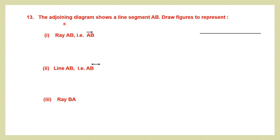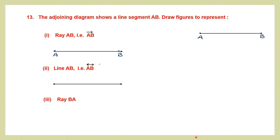Question 13: The adjoining diagram shows a line segment AB, which has fixed starting point A and ending point B. Draw figures to represent: first, ray AB — A is fixed and B is the other end; second, line AB — two arrowheads show it extends infinitely, named A on the left and B on the right; third, ray BA — B is the fixed point and the other end is A.